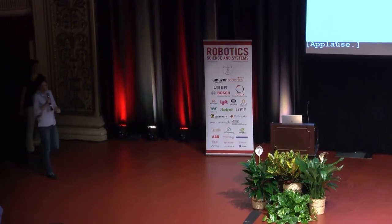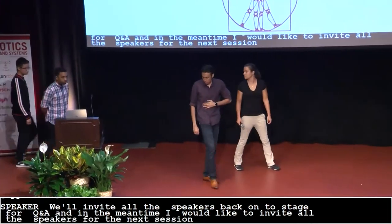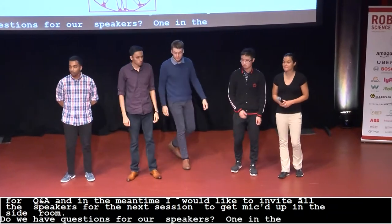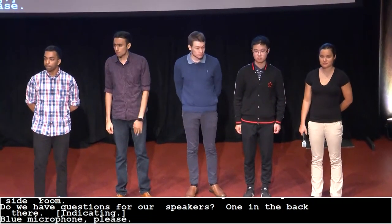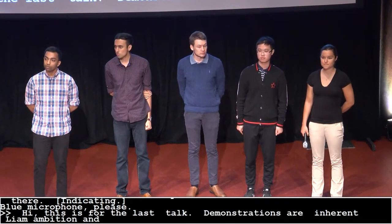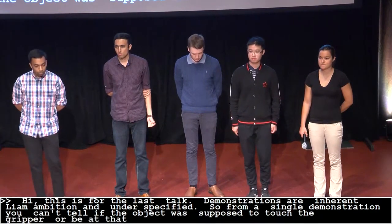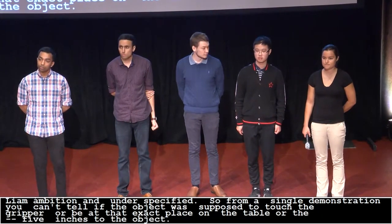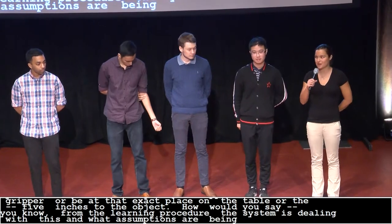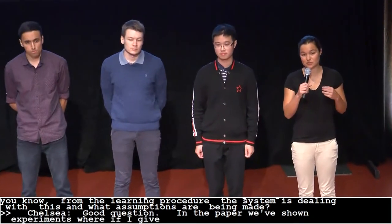All right. We're going to invite all the speakers back onto stage for the Q&A, and in the meantime, I'd like to invite all of the speakers for the next session to go up and get mic'd in the side room. Do we have questions for our speakers? This one in the back. This is the blue microphone, please. Hi. This is for the last talk. So demonstrations are inherently ambiguous and underspecified. So from a single demonstration, you can't really tell if the object was supposed to touch the gripper or be at that exact place on the table or be five inches to the left of some other object. So how would you say that the meta-learning procedure the system is dealing with this and what assumptions are being made?